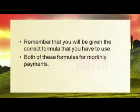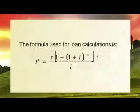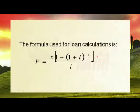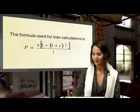Both of these formulas are for monthly payments — keep that in mind. The formula for loan calculations, present loan calculations, is: P = X × [1 − (1 + i)^n] / i.